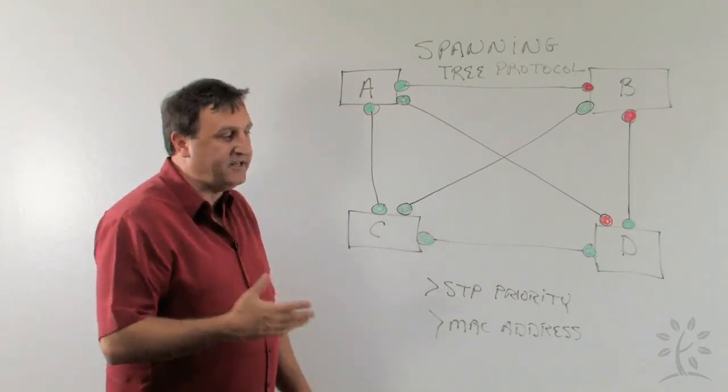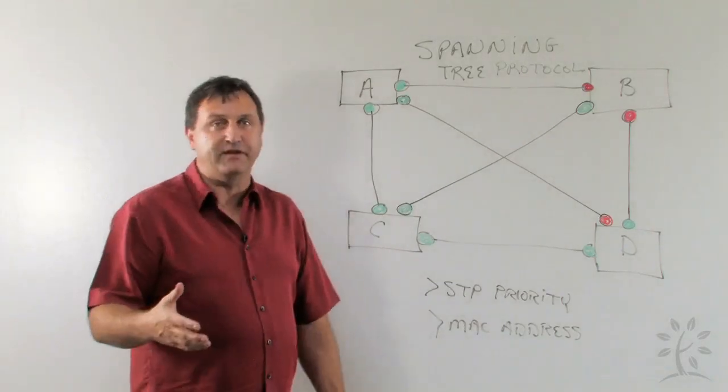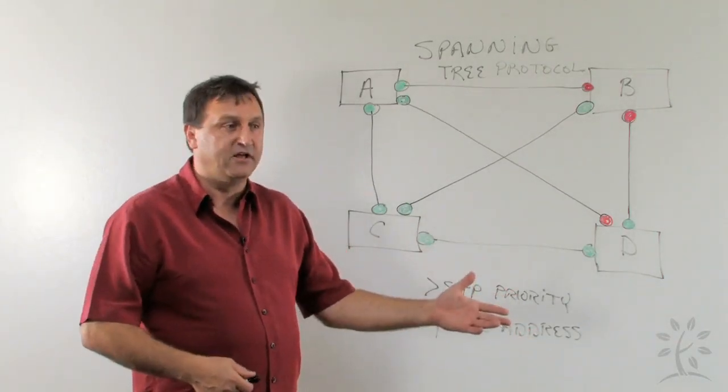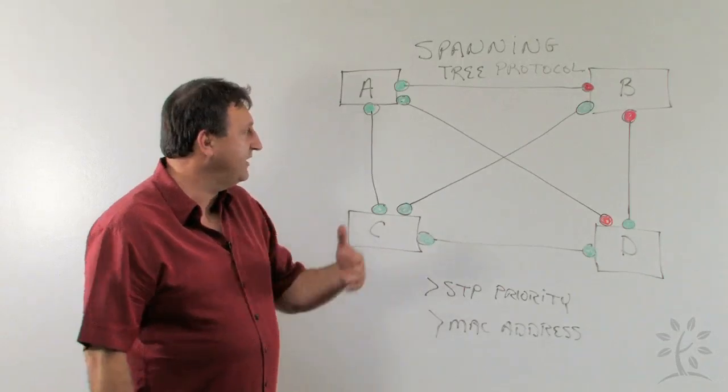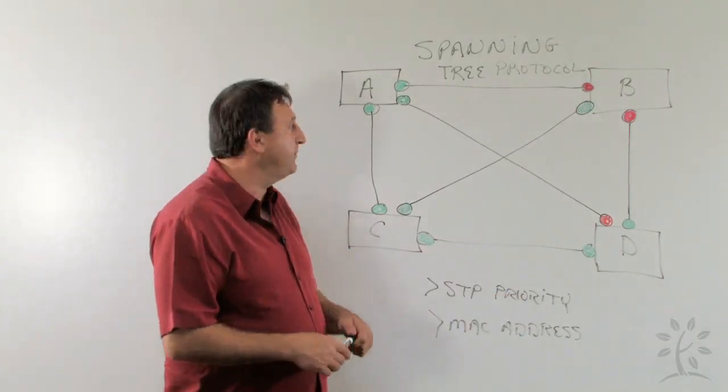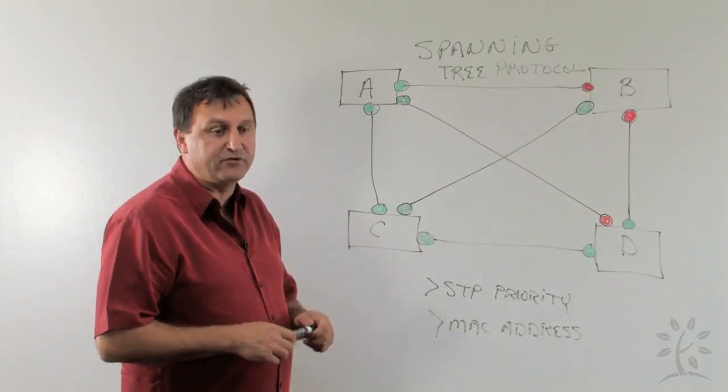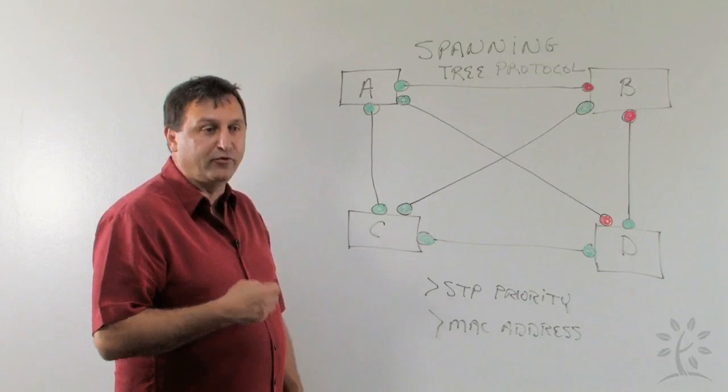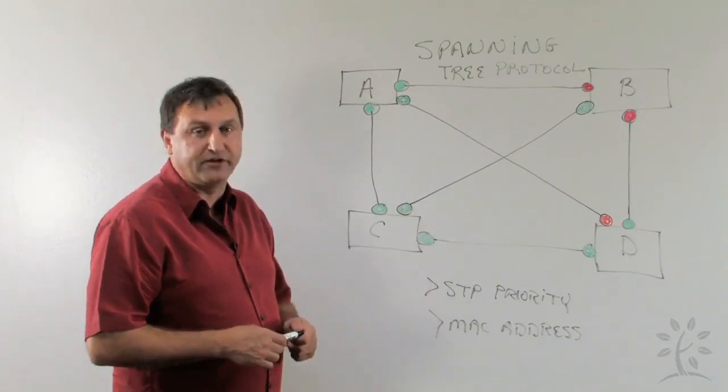Now we can actually intercede because we don't want any switch to be necessarily our root switch. We don't want a switch in an access closet somewhere to be our root switch. So what we can do is we can actually go in and put in a Spanning Tree priority, assign a Spanning Tree priority to the switch that we want to be the root. So we're going to give it a lower priority than all the rest of them and it will then become the root switch through a new election process.